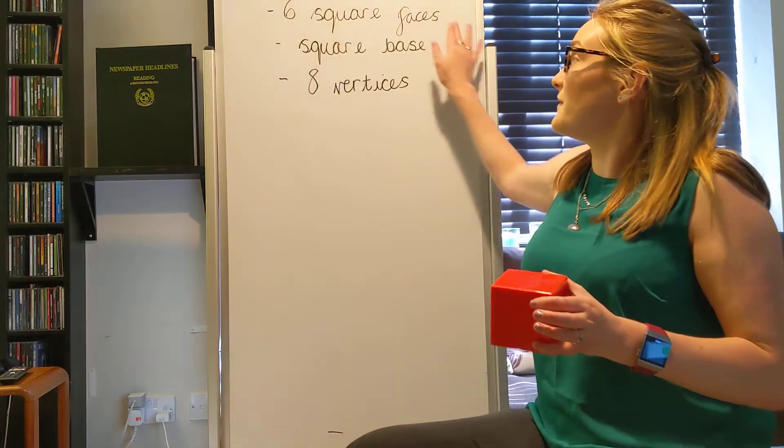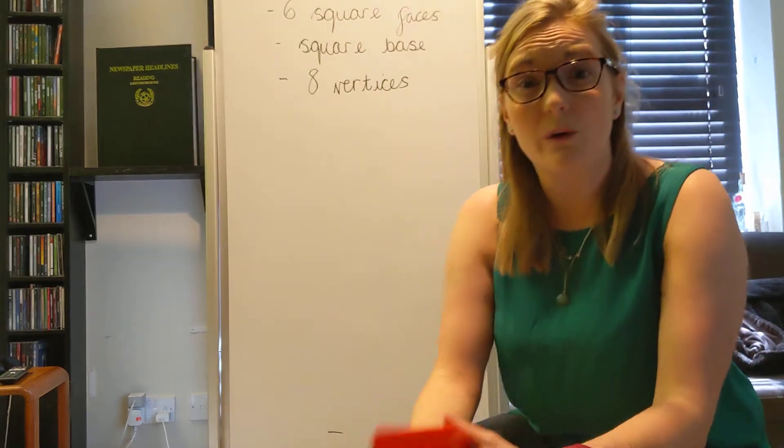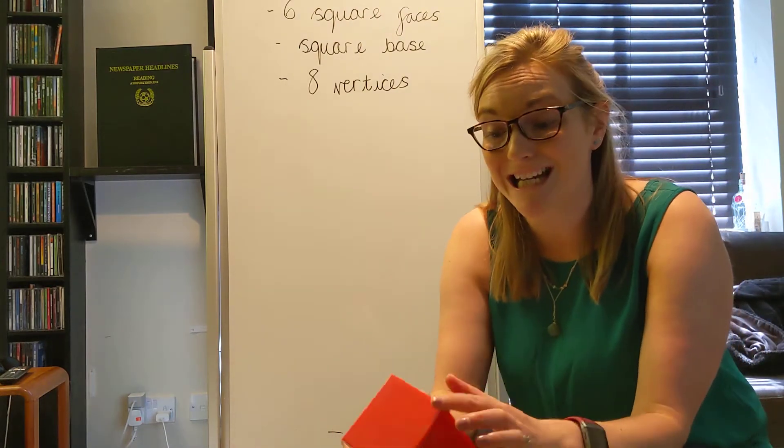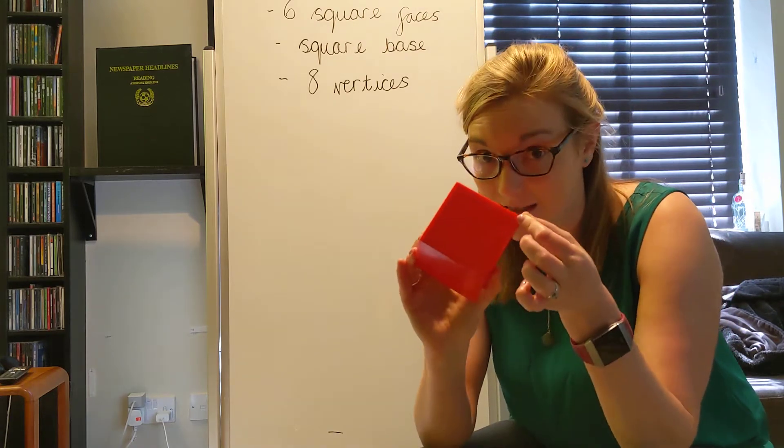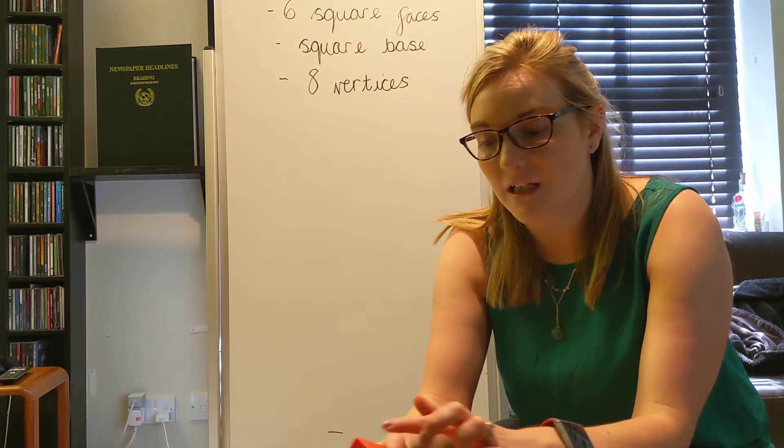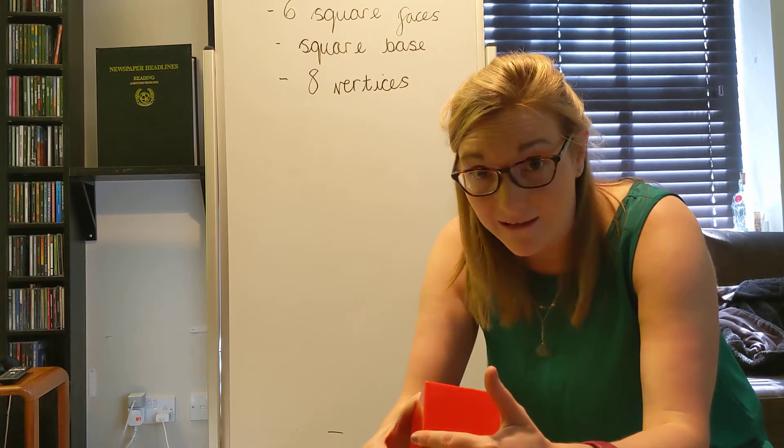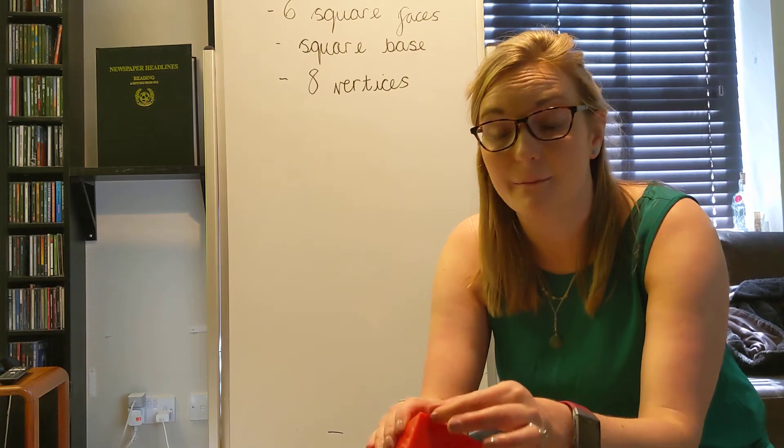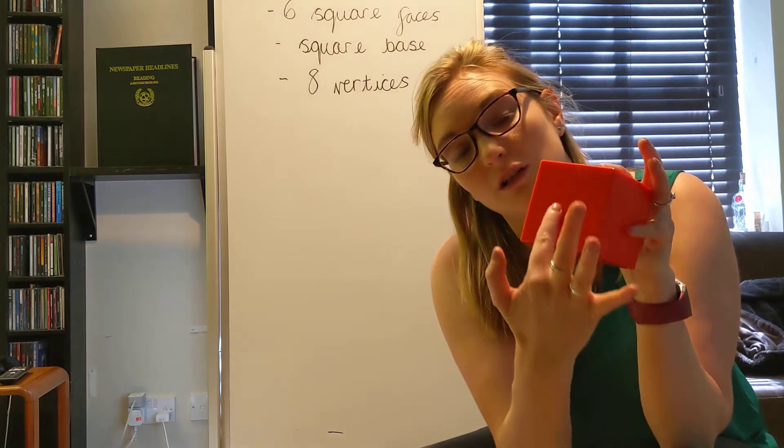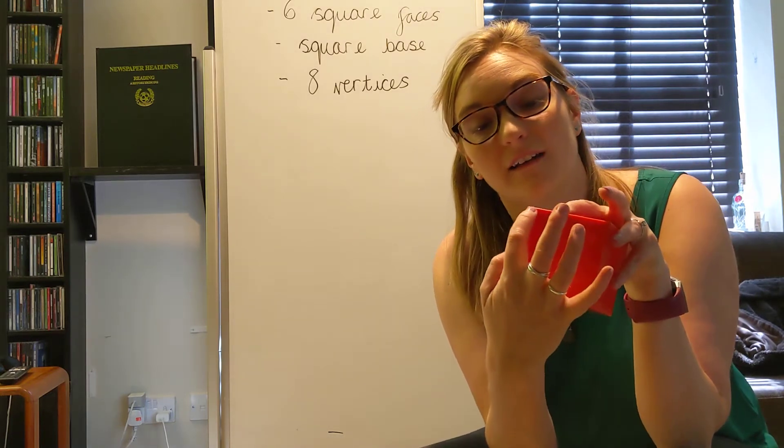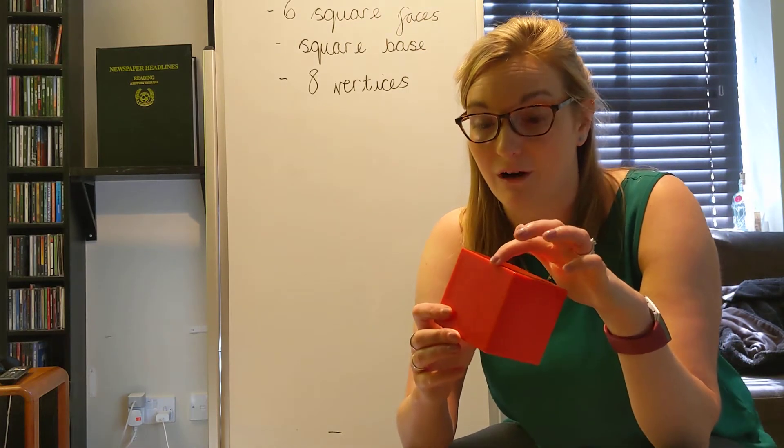So the cube has six square faces, a square base, eight vertices. And there's one more thing that we can learn about with a cube. We need to have something called edges for us to be able to make these vertices. So you see these funny bits here? This bit that I can run my finger along. These bits are where the faces come together to make an edge. So this face here, the top face, is coming to join with the side face and it's made an edge along the side of my cube.